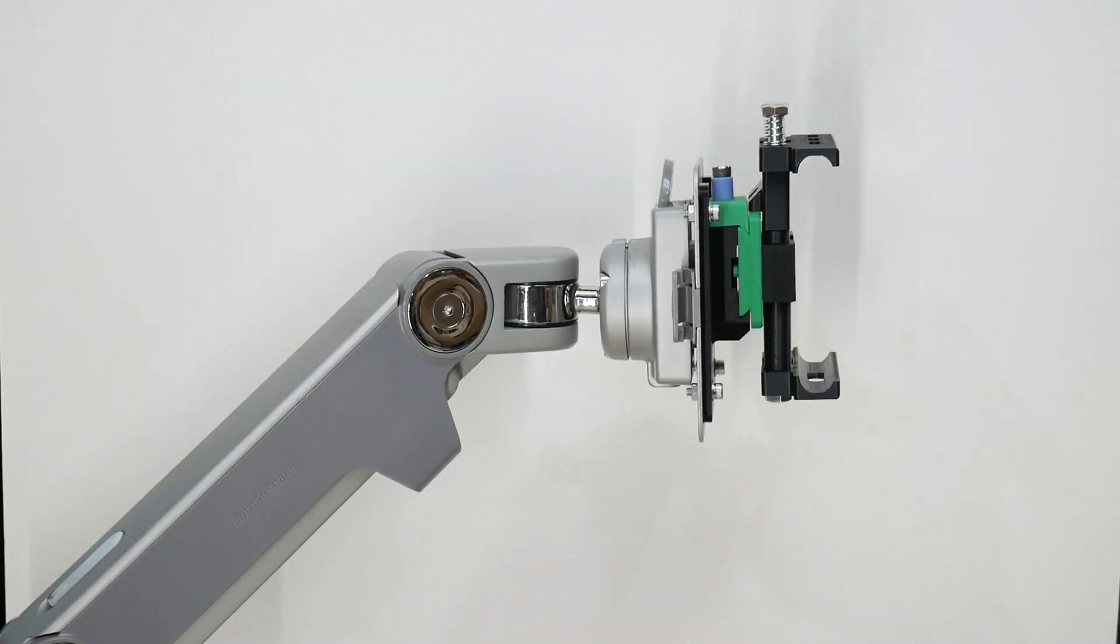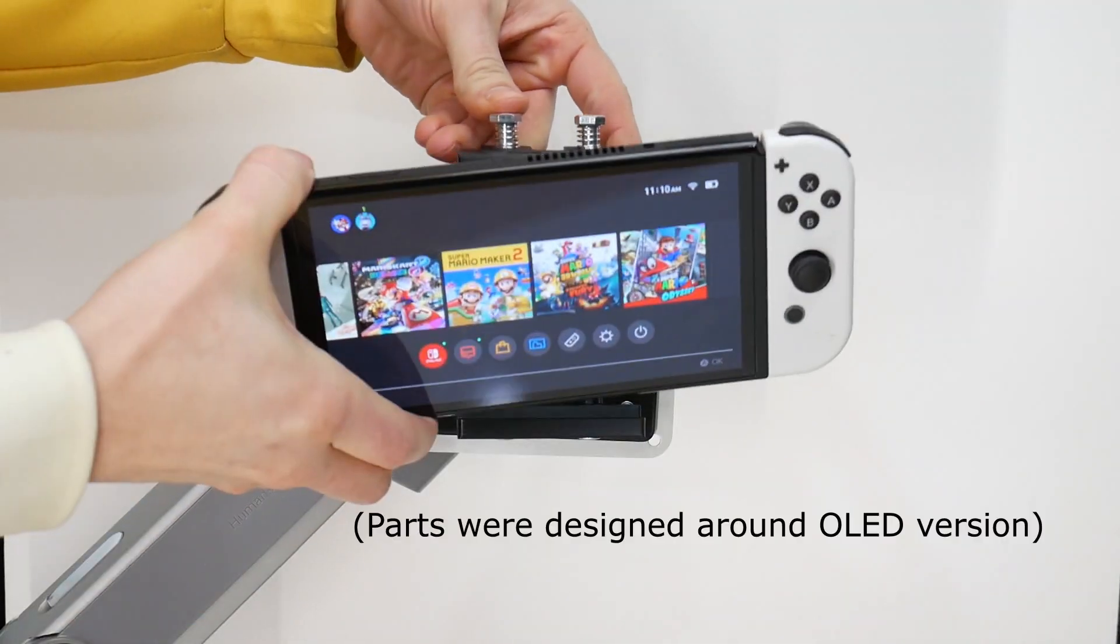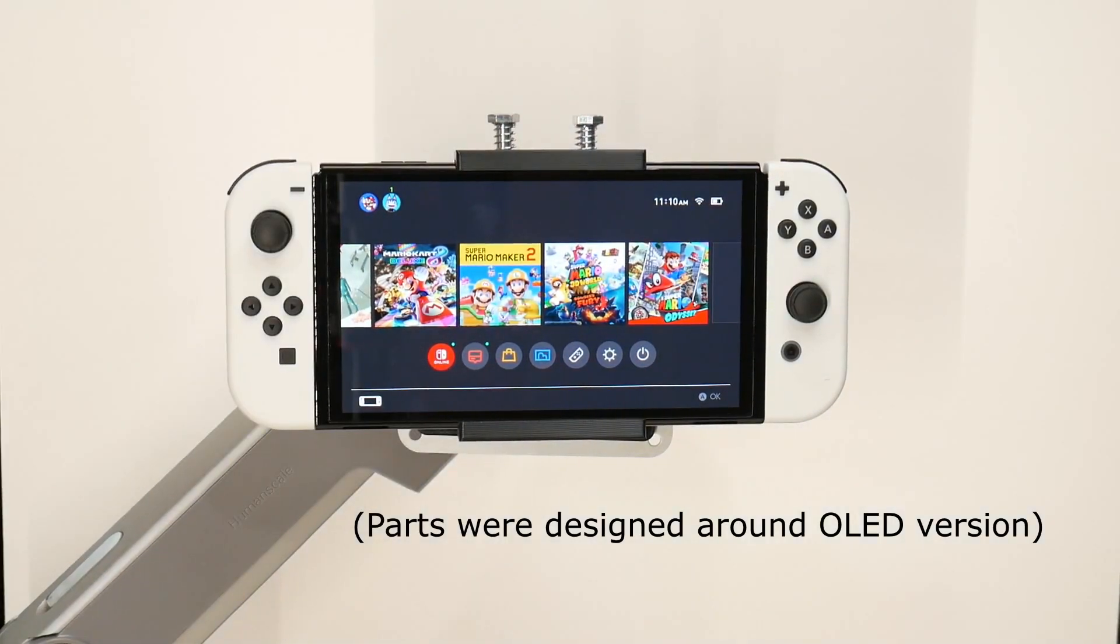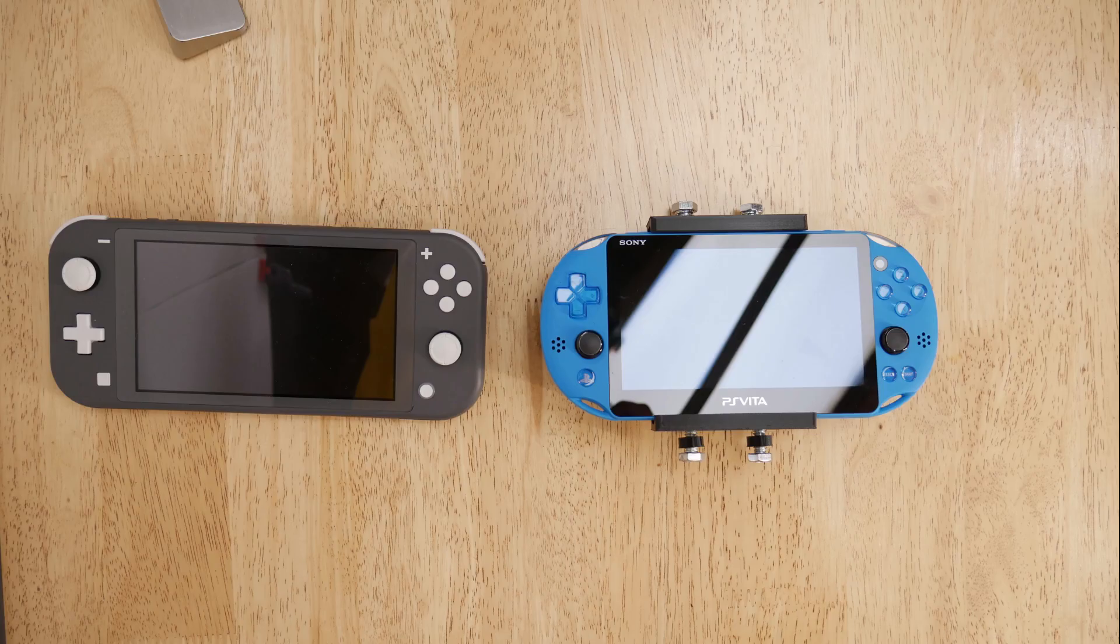This quick release mount lets you move the grip between mounts for no other reason than because you can. And if you want, you can swap two parts to grip your Switch Lite, your phone, or whatever rectangular device you own.